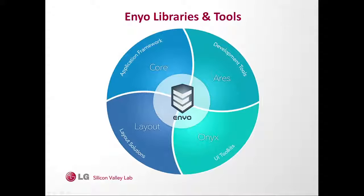All the libraries are optional — you need the Enyo core, but you can bring in whatever libraries you need. The layout library gives you fittable rows and columns, panels, lists, and a tree view. Then we have our Onyx library, which provides UI controls including buttons, inputs, pop-ups, headers, and a bunch of other things.